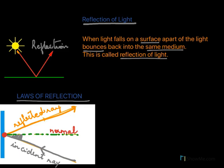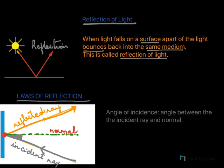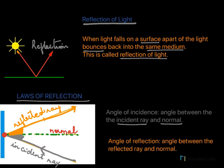The angle between the incident ray and the normal is called the angle of incidence. The angle between the normal and the reflected ray is called the angle of reflection.